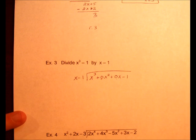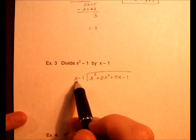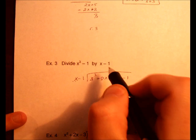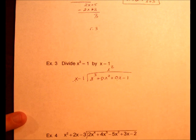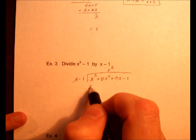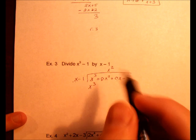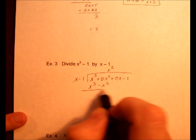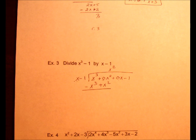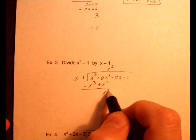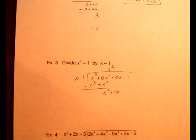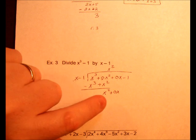So now it's just the same exact process, do the same thing over and over again. So x times what is x³? That would give us x². And again, write it over the x², so everything stays in line. So x² times x is x³, x² times -1 is -x². Of course, you're getting used to it. Change the signs. 0 and x². Even though it's a 0x, go ahead and drop it down, because we still need to have it there in order to be able to combine these two terms with those two terms.